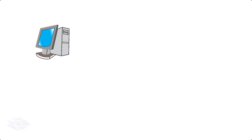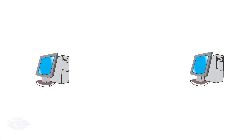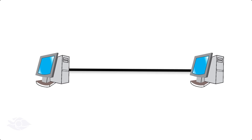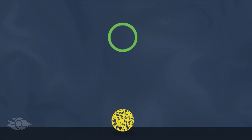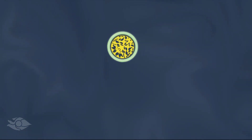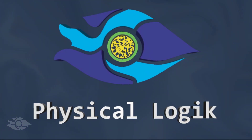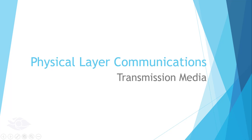The minimum requirement of a network is to have at least two end stations and a single point-to-point connection between them to transmit data. Hello guys, welcome to my presentation on physical layer communications, and we'll talk about the transmission media used in computer networks.